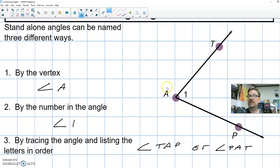Call it T-A-P or trace it the other way, P-A-T. Notice the vertex is always in the middle.